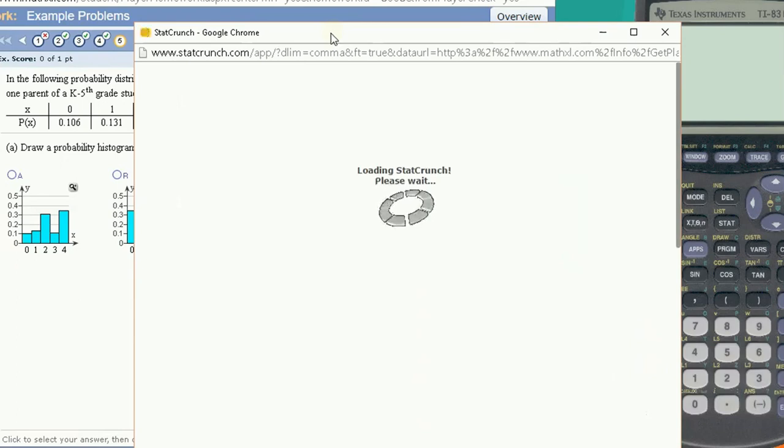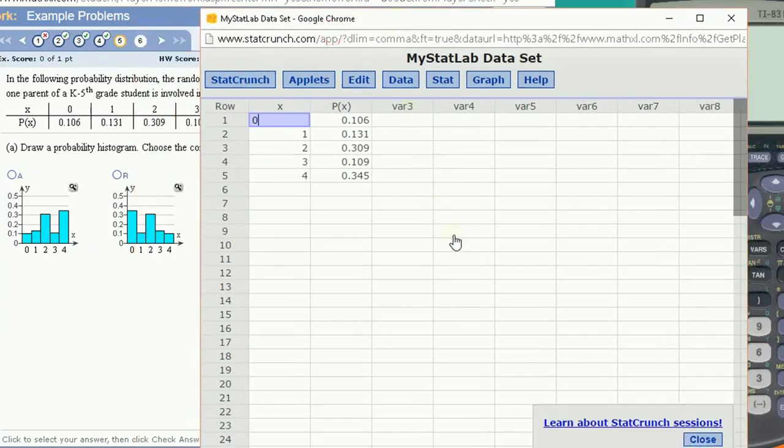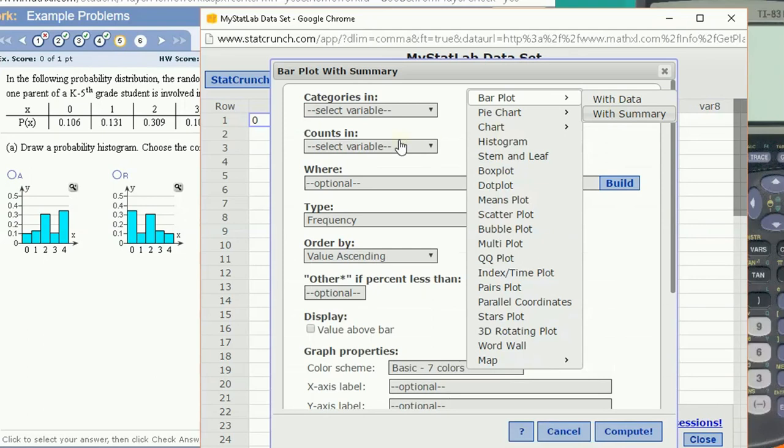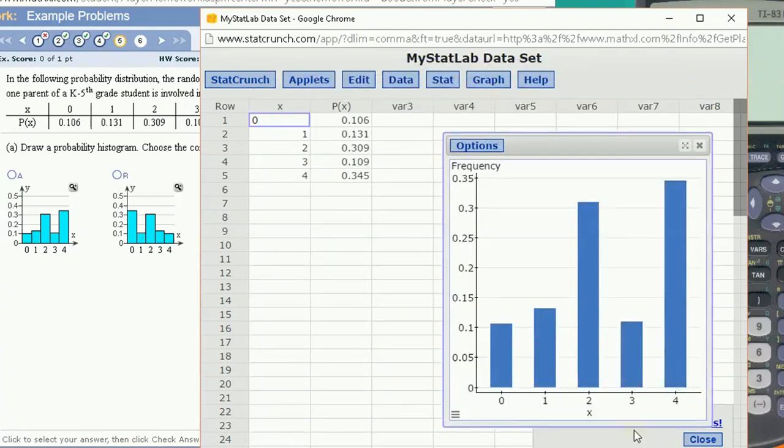We can actually take a probability distribution and create a probability calculator for it. So if I wanted to, I can graph this as a bar plot with summary data where the category values are x and the counts are in px. And that's all I really need to do. Hit compute and you'll get your bar chart.